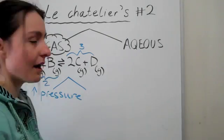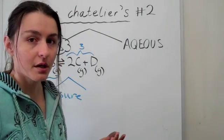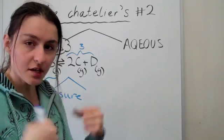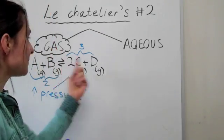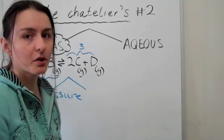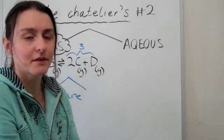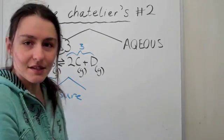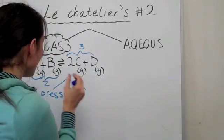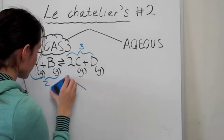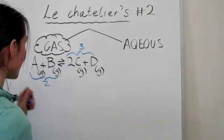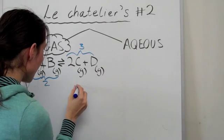Now remember what we've done, we've increased pressure. So we've decreased the distances between particles, and therefore making more will just make a bigger problem because you have less space even, even less space than you did before. So we're actually going to generate only two particles. So we go to the side with less particles, we go backwards,